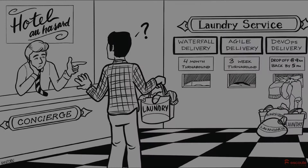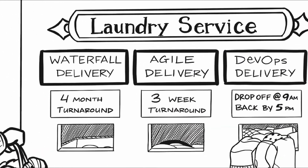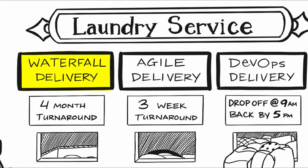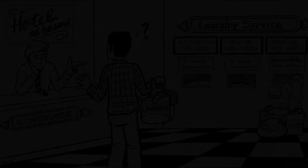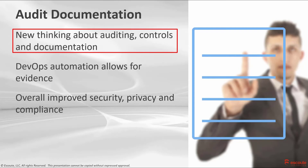This framework is pointing over at the laundry service and says, hey, you've got a couple of options: you can do a waterfall delivery — that's a four-month turnaround, we collect everybody's laundry and do it all at once. We can do an agile delivery and get that back to you in about three weeks. Or we have this new thing called DevOps delivery — you drop this off by 9am and we can have it back to you by 5pm. Take a look at the backlog of all the tasks and laundry waiting for that DevOps delivery. This can happen to you too, once you start getting into DevOps. These new DevOps patterns challenge our traditional thinking about auditing, controls, and risk mitigation.